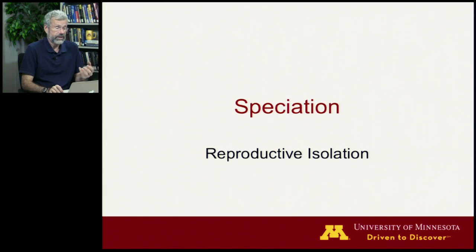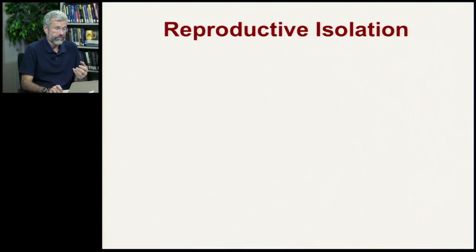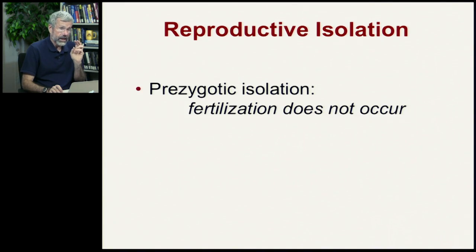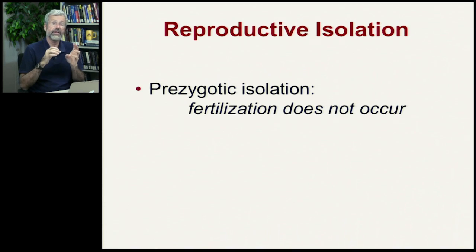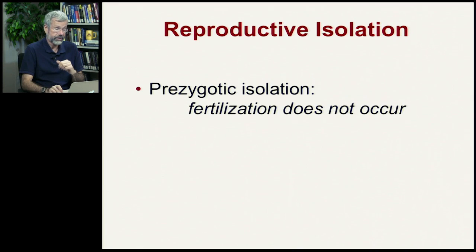In understanding the process of speciation, the first thing we need to know is what isolates individuals reproductively between different species. Reproductive isolation can happen before fertilization — before a zygote is formed — so that's prezygotic isolation, where fertilization never occurs in the first place.